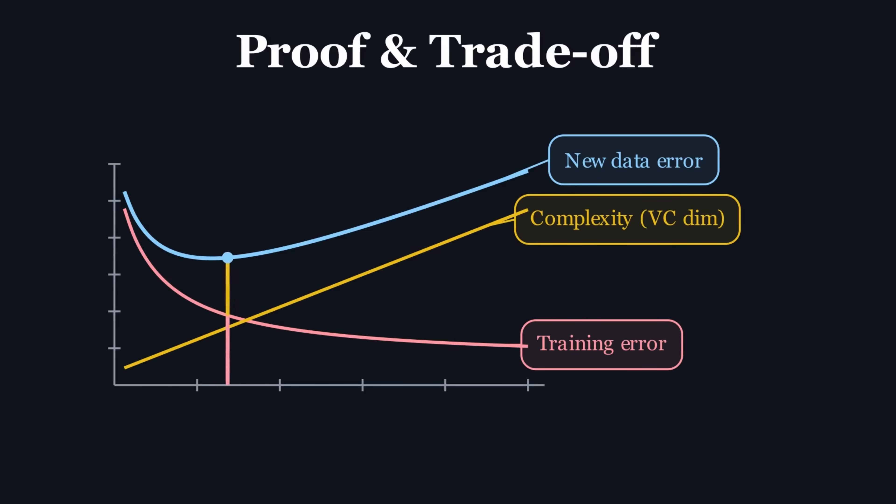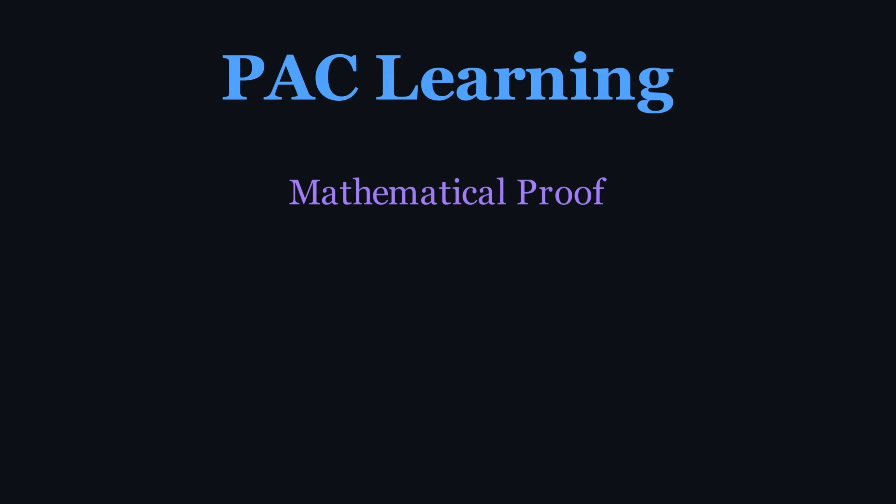A more complex model might do better on the training data, but it pays a higher complexity penalty, making it more likely to fail on new data. This is the mathematical definition of overfitting. Most importantly, the proof tells us exactly how much data we need to collect to be confident, with high probability, that our approximately correct model is good enough to trust. Without this proof,